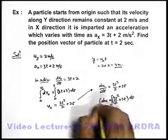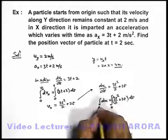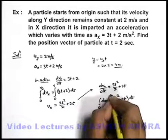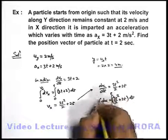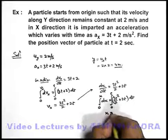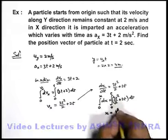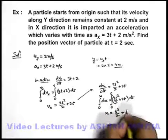And again if we integrate both the sides with limits at t equal to zero particle started from origin, and at a time t a particle is at a position x. So we can easily get the value of x as, on integrating we'll get t³/2 + t².